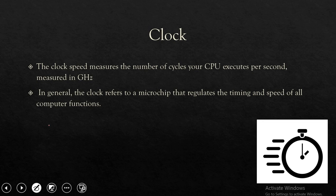The clock speed measures the number of cycles your CPU executes per second. In general, the clock refers to a microchip that regulates the timing and the speed of all the computer functions.